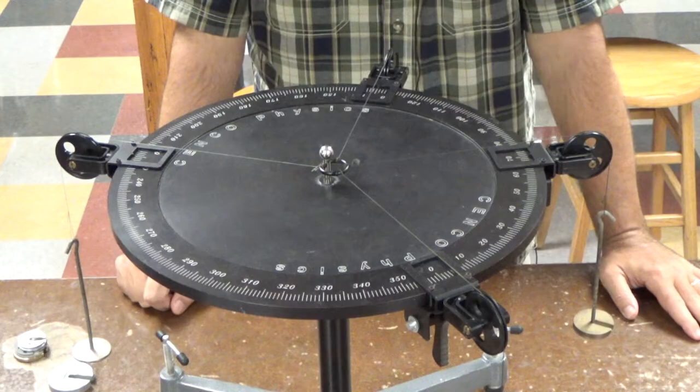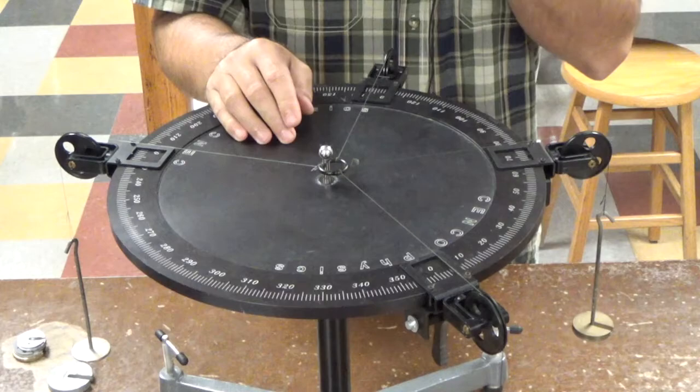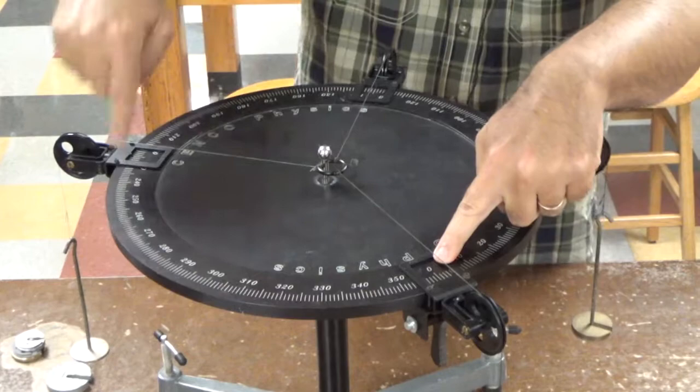Okay, so here's the force table for the experiment, and what I have set up here is our three vectors. You can see right here, at zero degrees, we have angle markings on the outer edge of the circle.